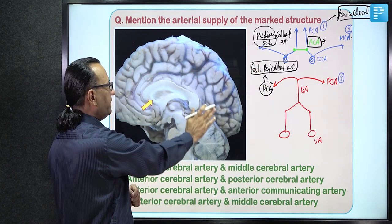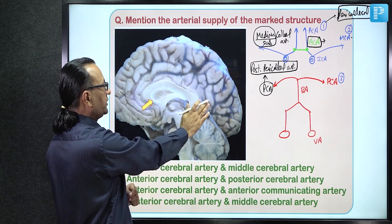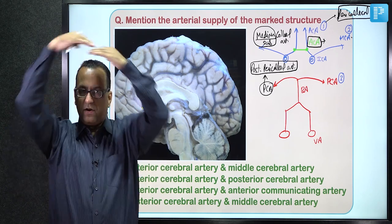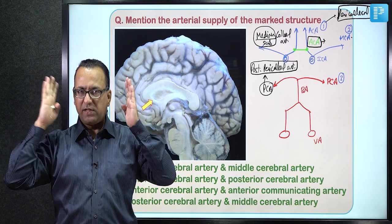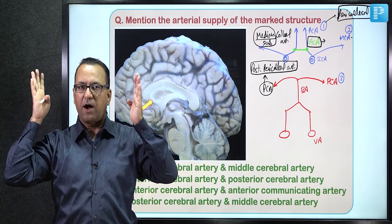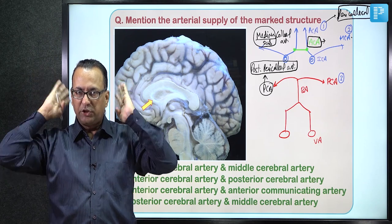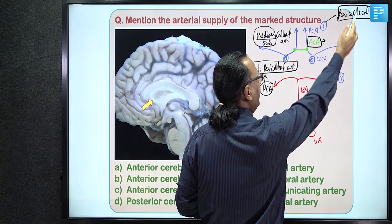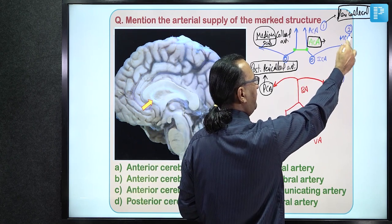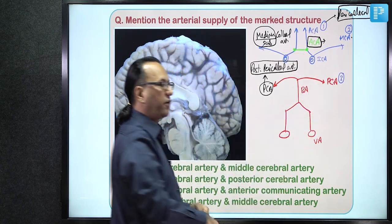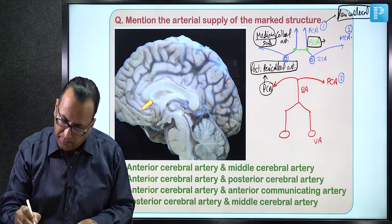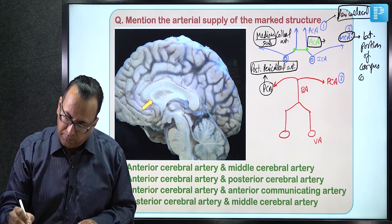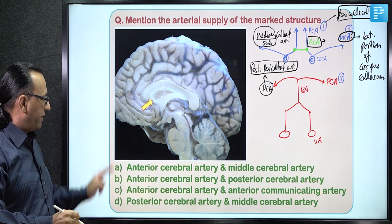The middle cerebral artery goes to the lateral aspect of the cerebrum and supplies the lateral portion of the corpus callosum without named branches. So in total, four arteries supply the corpus callosum: anterior cerebral, anterior communicating, posterior cerebral, and middle cerebral (for lateral portions). Before reaching an answer, we must identify which part of the corpus callosum is indicated.